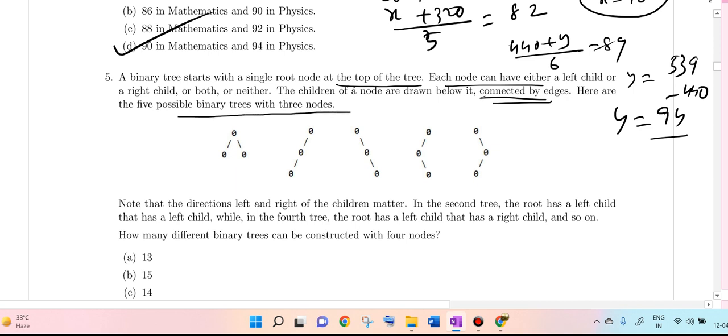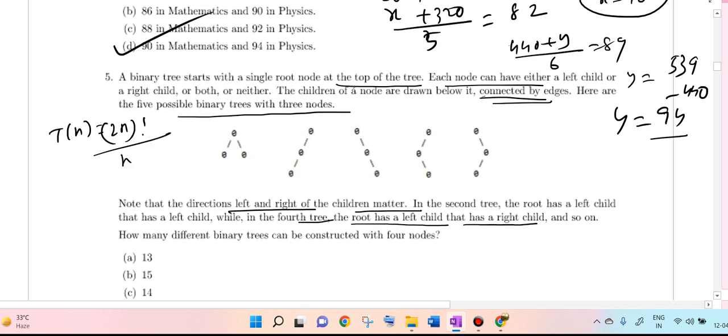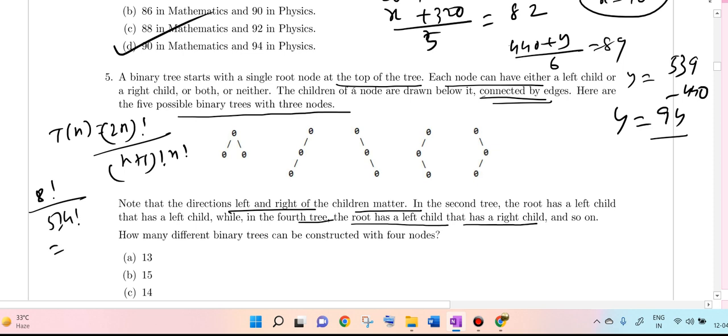Here are the five possible binary trees with 3 nodes. Note that the directions left and right of the children matter. In the second tree the root has a left child, in the fourth tree the root has a right child, and so on. How many different binary trees can be made with 4 nodes? It is very easy. T(n) equals (2n)! divided by (n+1)! times n!. So T(4) is 8! divided by 5! times 4!, which equals 14. So 14 is the answer.